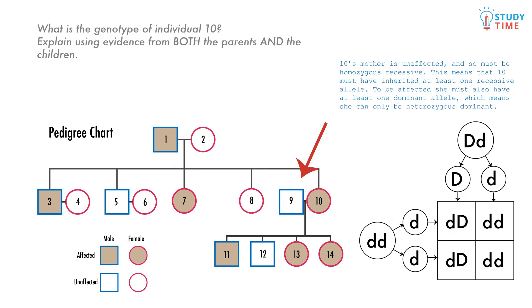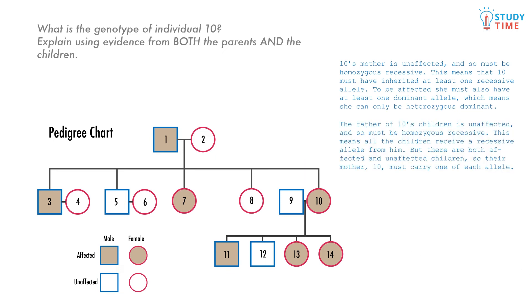So the mother, individual 10, must have a dominant and a recessive allele. This evidence confirms our answer from before, that the mother is heterozygous dominant. We have now fully answered the question. See how keeping a clear head and working systematically through the question helped us find the answer?